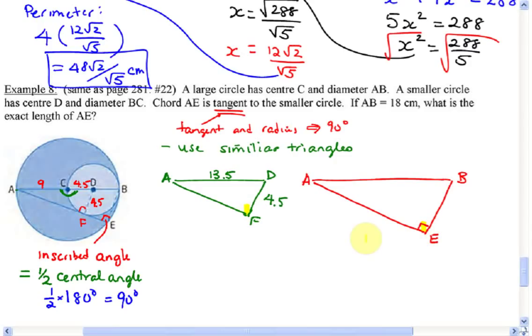Angle F and angle E are both 90 degrees. Angle A is the same in both triangles, so therefore angle D must equal angle B, since the three angles in each triangle must sum to 180 degrees. That's why they are similar triangles.